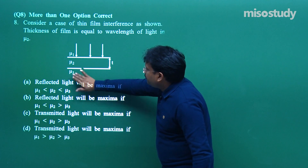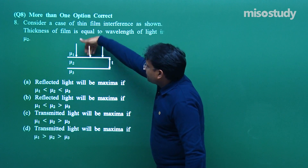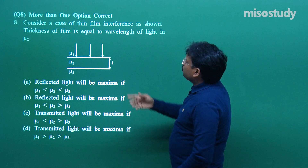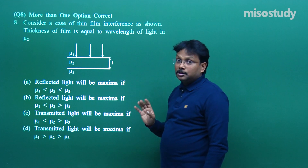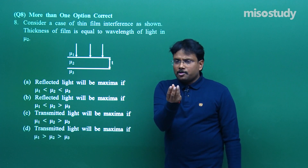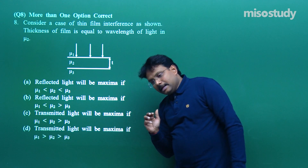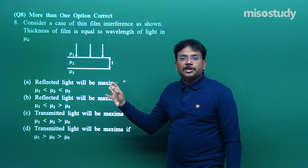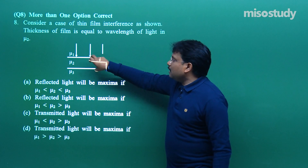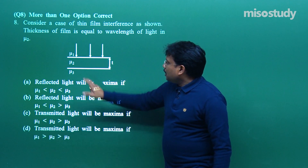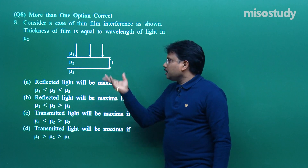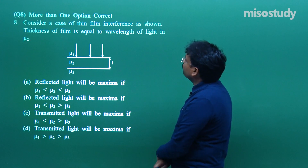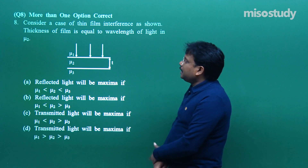The setup has medium 1, medium 2, medium 3. Rays come in, undergo refraction at each boundary, with transmission and so on. Consider thin film interference — like a few drops of oil on water. Change your viewing angle and you'll see a very colorful film. So the setup is: air, oil, water. Thickness of the film equals the wavelength of light in medium μ₂.